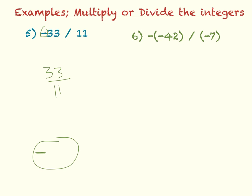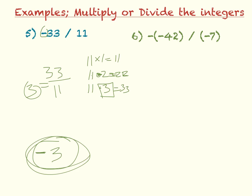then I know that 11 times 1 is 11, 11 times 2 is 22, and 11 times 3 is 33, so that means that 33 divided by 11 is 3. So my final answer is negative 3.